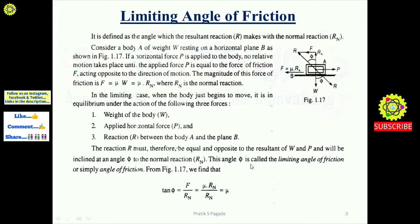We can calculate phi using the formula: tan φ = F / RN. Here, as you can see, this is a right-angled triangle, so tan φ equals the opposite side F divided by the adjacent side RN. We have used trigonometry to find phi, the angle of friction or limiting angle of friction.